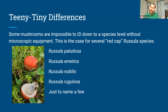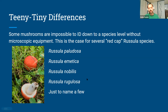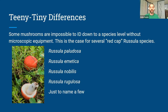Many mushrooms have tiny differences and some are impossible to identify down to the species level without microscopic equipment. This is the case for several red-cap Russula species — you'll see them everywhere on hiking trails. They're also called brittle caps or brittle gills because if you rub your fingers on them, the gills break apart really easily. Here are four species that would all be referred to as red-cap Russula, but some of them actually require microscopic analysis to determine the specific species.